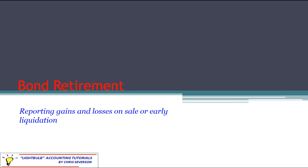In this module we are going to be covering the topic of bond retirement, which essentially means we've issued the bond, we've borrowed money, and now we are deciding to pay it off. Specifically, we're going to be talking about when we pay it off prior to the maturity date and what gains and losses we have to report and how we handle that. This is early liquidation — we're not paying it off at maturity, we're paying it off early.